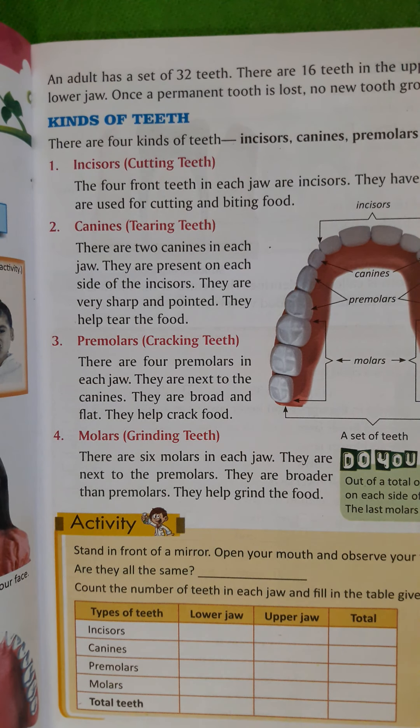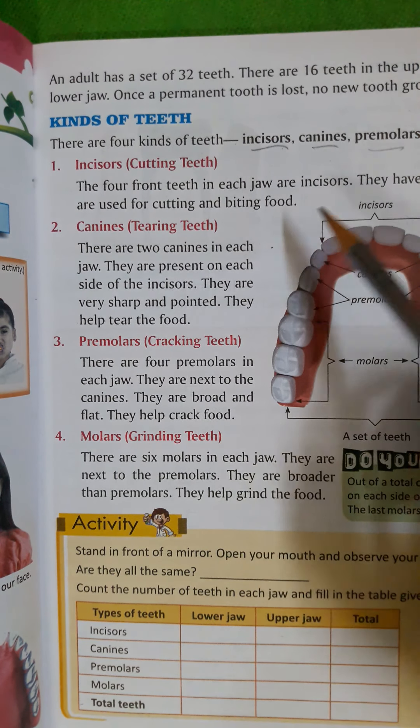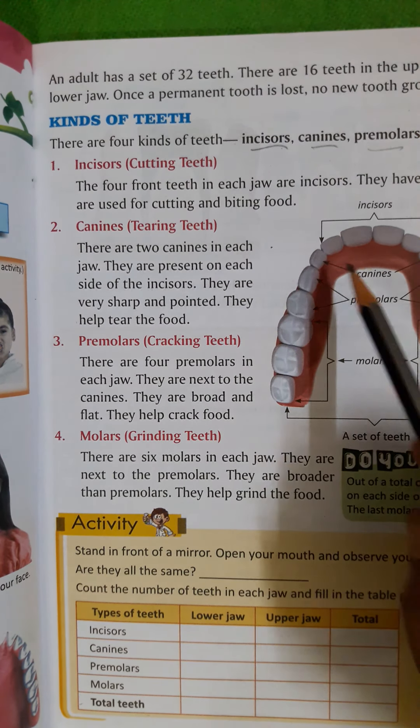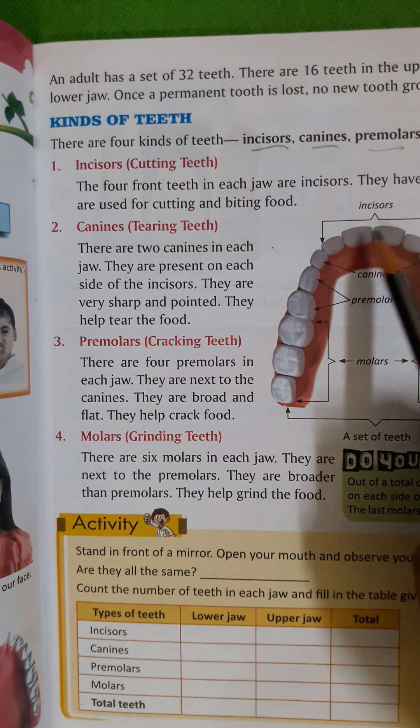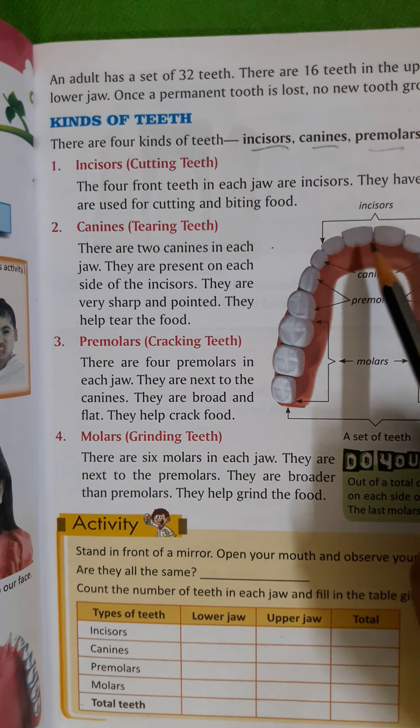Number one — incisor, the cutting teeth. The four front teeth in each jaw are incisors. They have sharp, straight edges and are used for cutting and biting food. You can see these four front teeth here — they are known as incisors and are used for cutting and tearing.